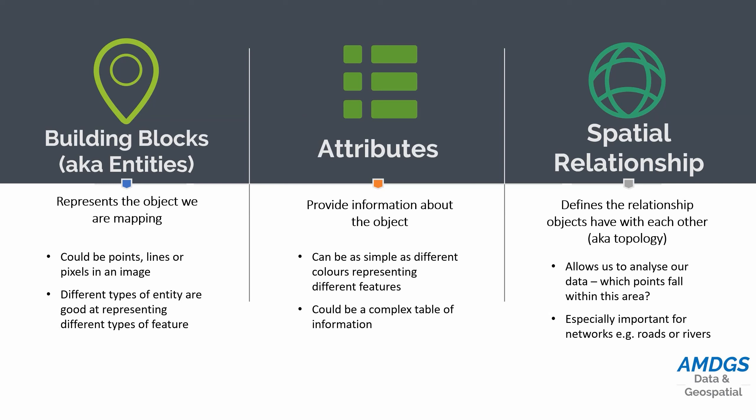Linked to these building blocks we have what we call attributes — essentially information about the object. This can be as simple as different colours representing different types of features, particularly if we're using a raster layer, or it could be basically an Excel spreadsheet that sits behind the data. So if we click on a point, it has a whole row with a house name, house number, house age, what it was built from — all kinds of information that lie behind that single point.